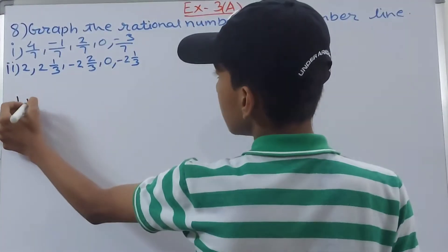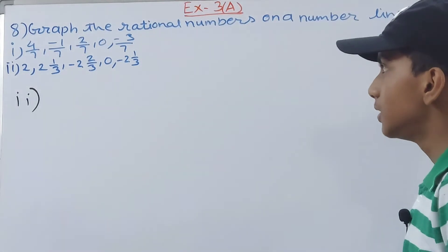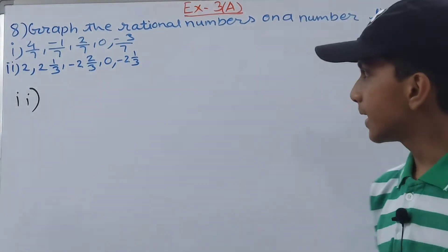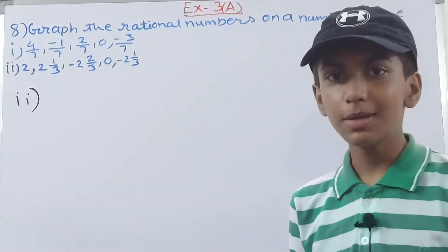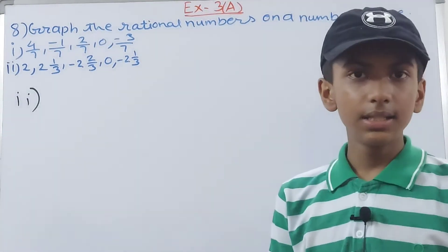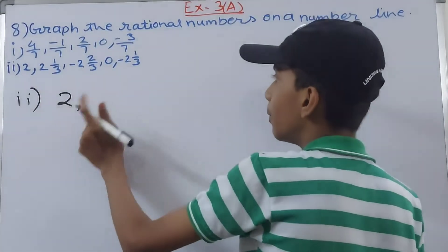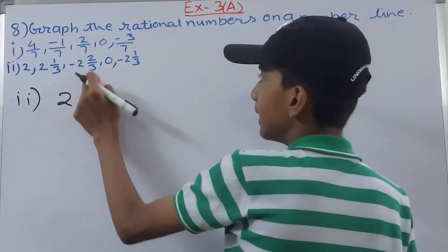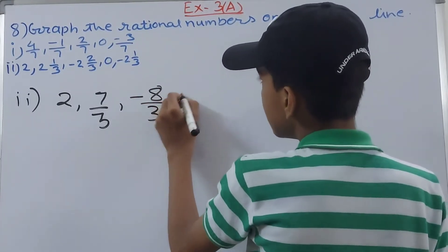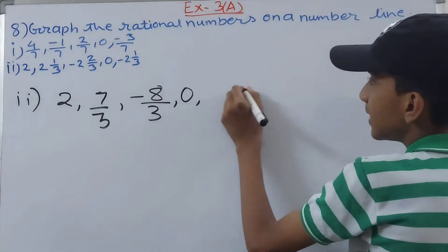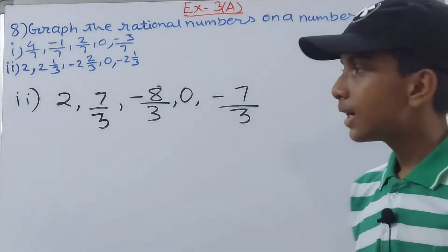The next part has: 2 whole 1 upon 3, minus 2 whole 2 upon 3, 0, and minus 2 whole 1 upon 3. We convert these mixed fractions to improper fractions: 2 whole 1 upon 3 becomes 7 upon 3; minus 2 whole 2 upon 3 becomes minus 8 upon 3; and minus 2 whole 1 upon 3 becomes minus 7 upon 3. All denominators are 3.